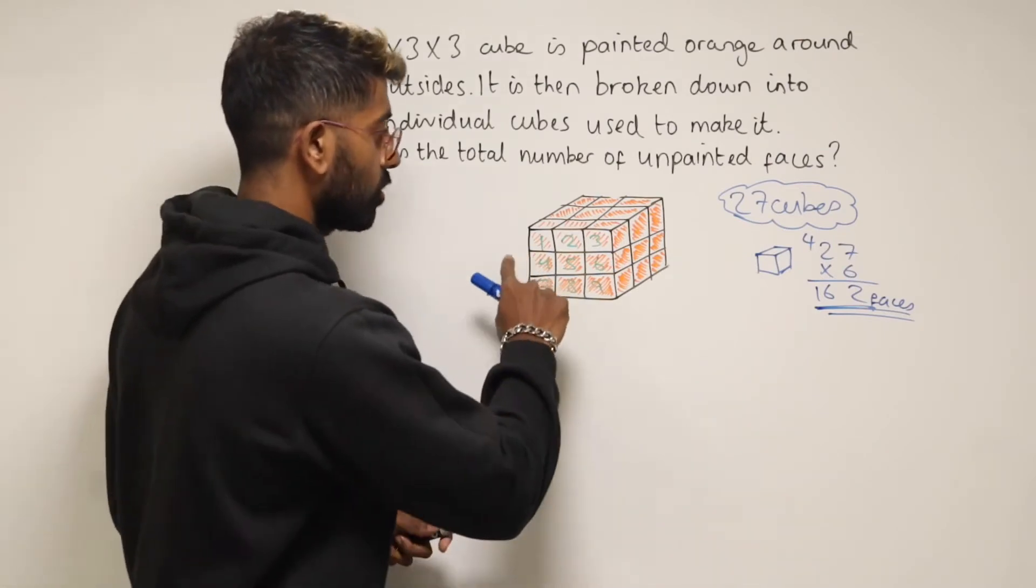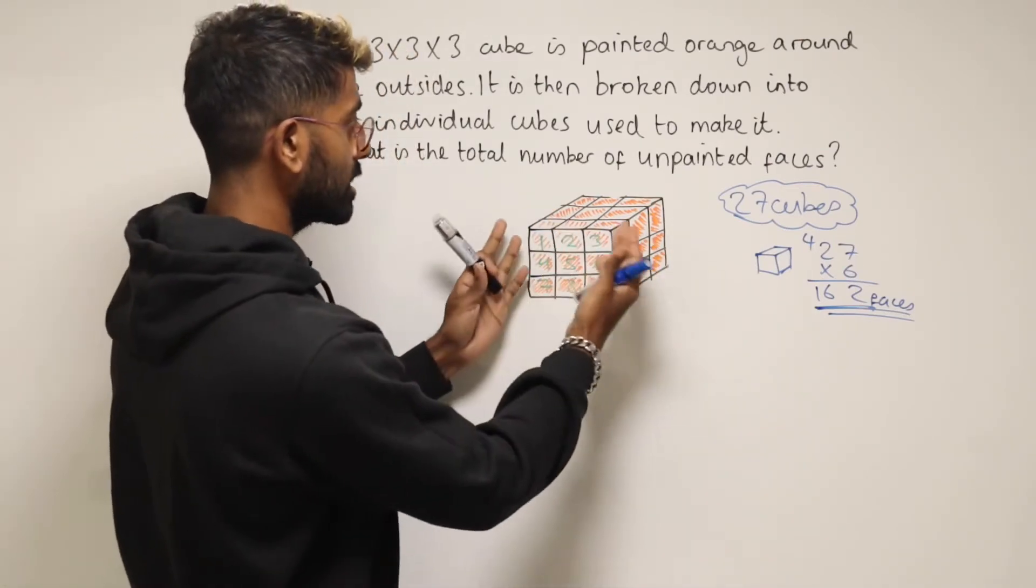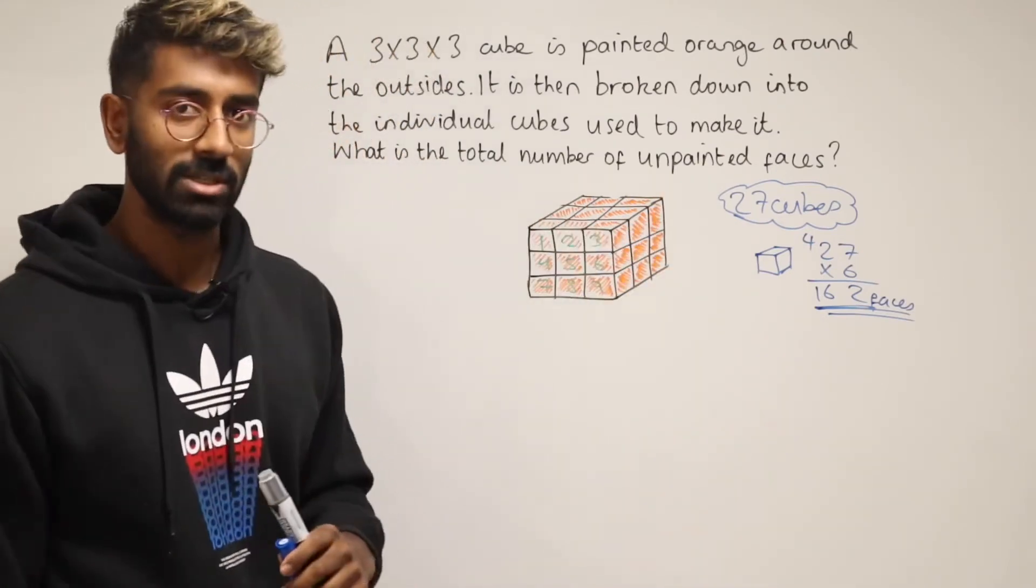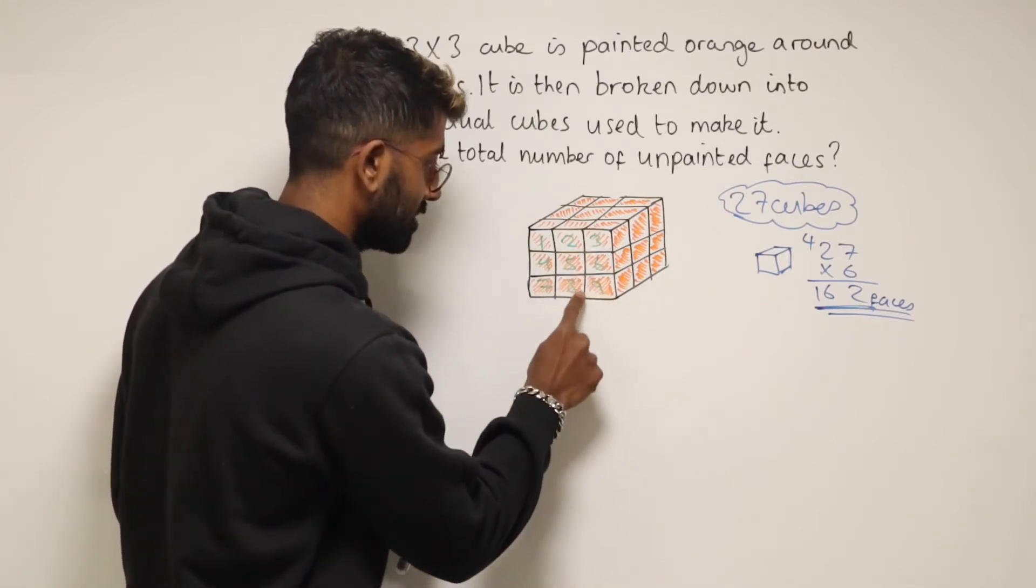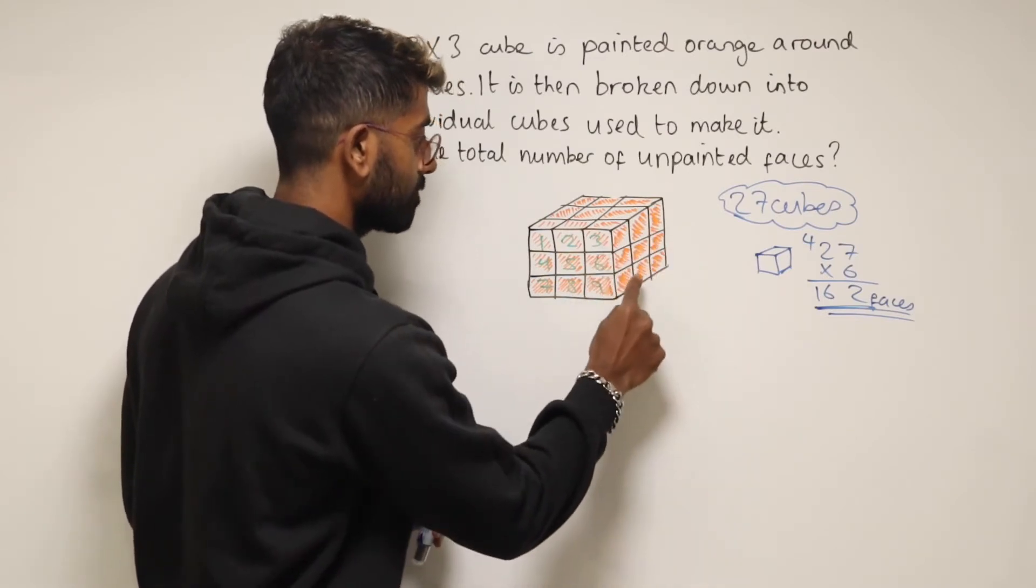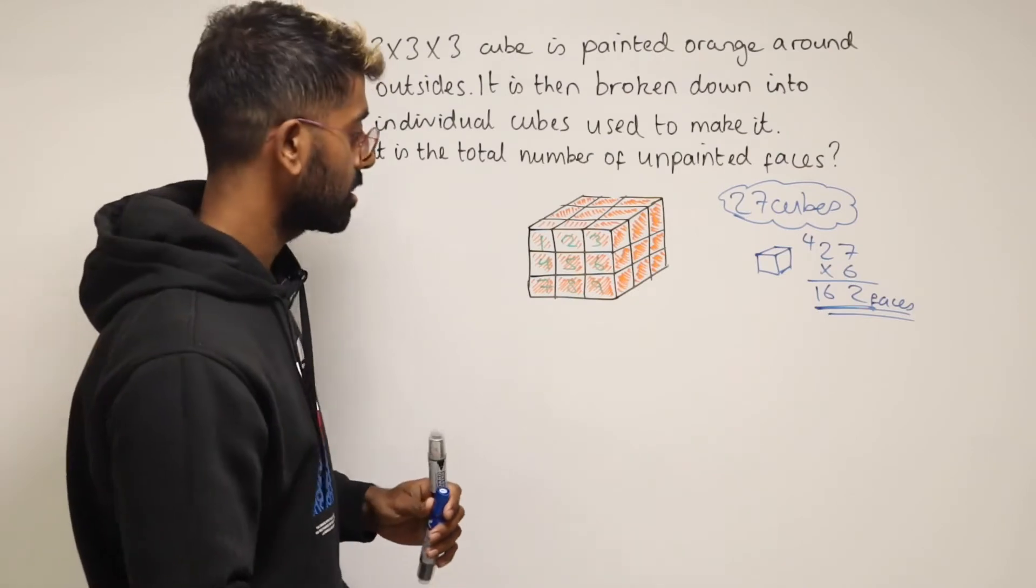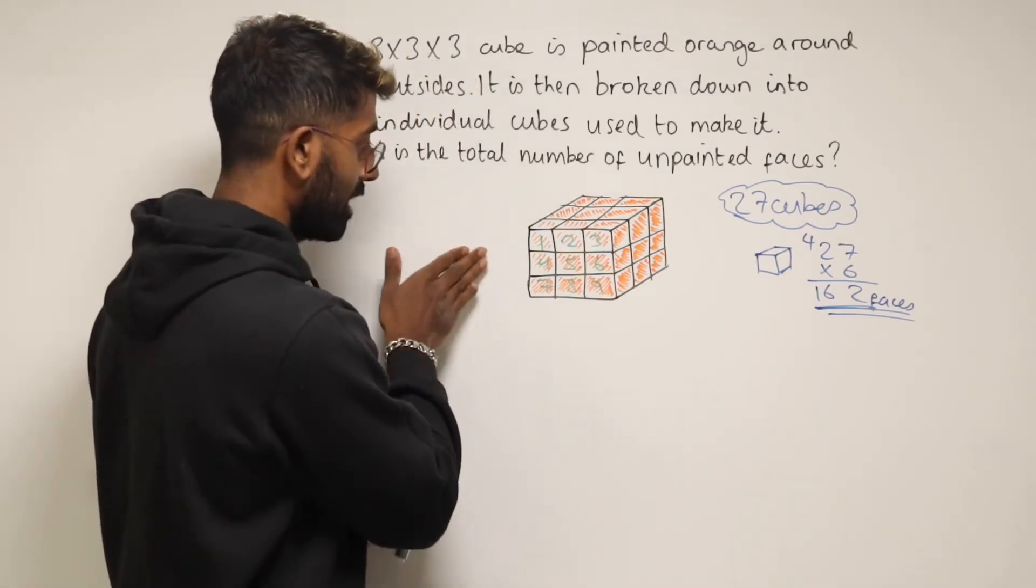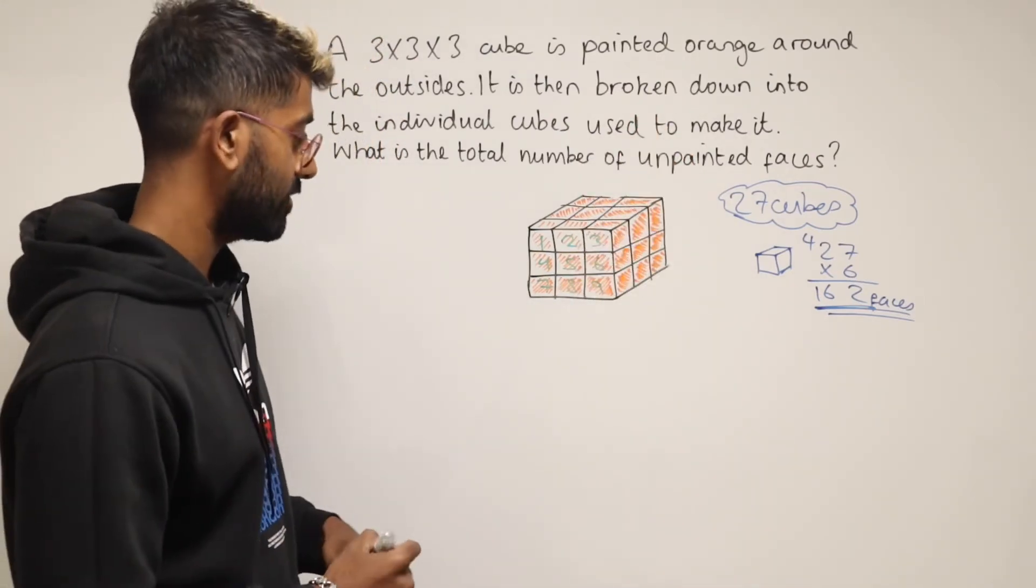Now what we can do is, on this cube, work out how many faces are actually painted, because it's just the outside of this cube that's actually painted. On the front face, we've got nine painted faces. On this side, there'll be another nine painted faces. On the top, another nine. On the bottom, another nine. On the left, another nine. And at the back, another nine painted faces.